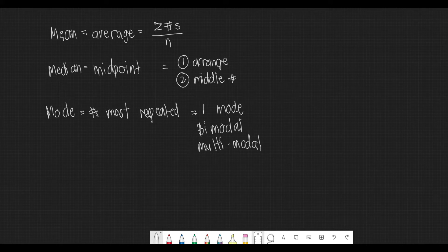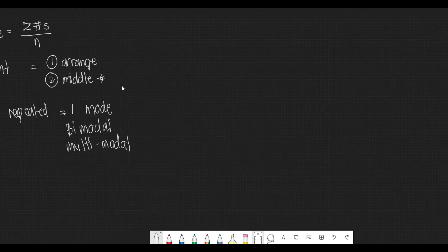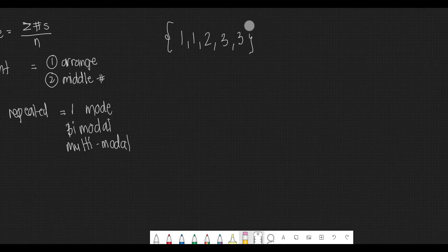So what if I have an example here? We need to compute for the mean, median, and mode of it. The given set has numbers 1, 1, 2, 3, and 3. What is the mean, median, mode for this? Let's just add a number to make it interesting. Let's place here another 3.